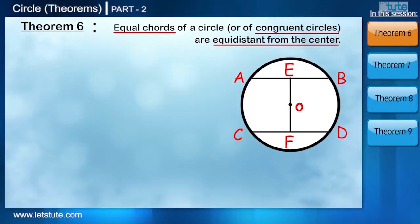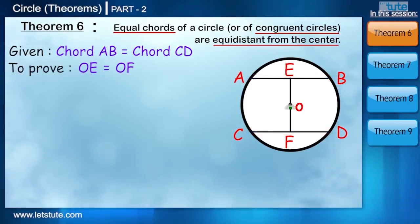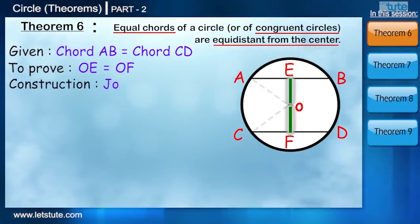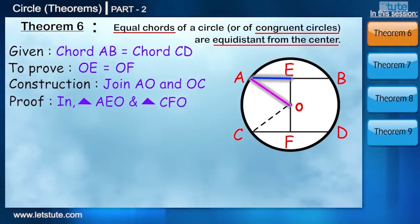So let's consider a circle with center O and two equal chords AB and CD. We have to prove that the distance from the center to the chord is equal. Let's call the distance as OE and OF. So if we can prove triangle AEO is equal to triangle CFO, then we can say that distance OE is equal to OF.